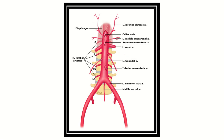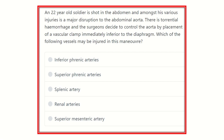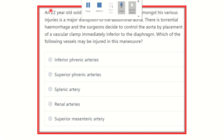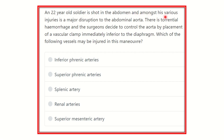Hey everyone, welcome to another question and answer session for a mercy exam. Read the question very carefully, then find out the key point. A 22-year-old soldier is shot in the abdomen, and amongst his various injuries is a major disruption to the abdominal aorta. There is torrential hemorrhage and the surgeon decides to control the aorta by placement of a vascular clamp immediately inferior to the diaphragm.